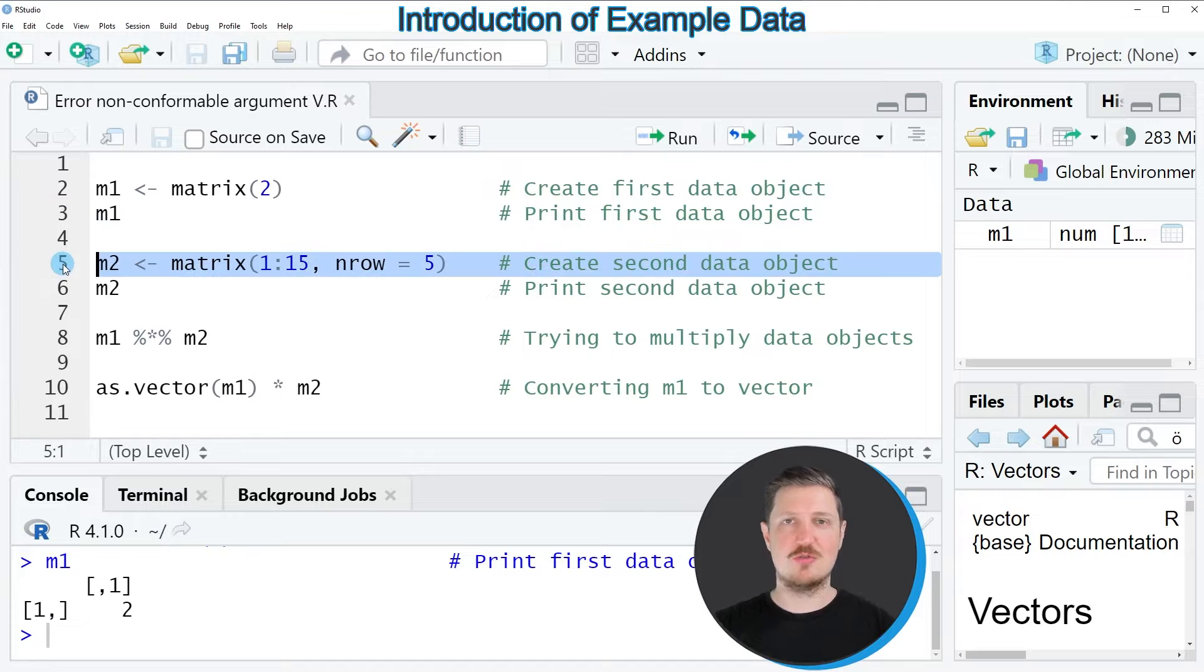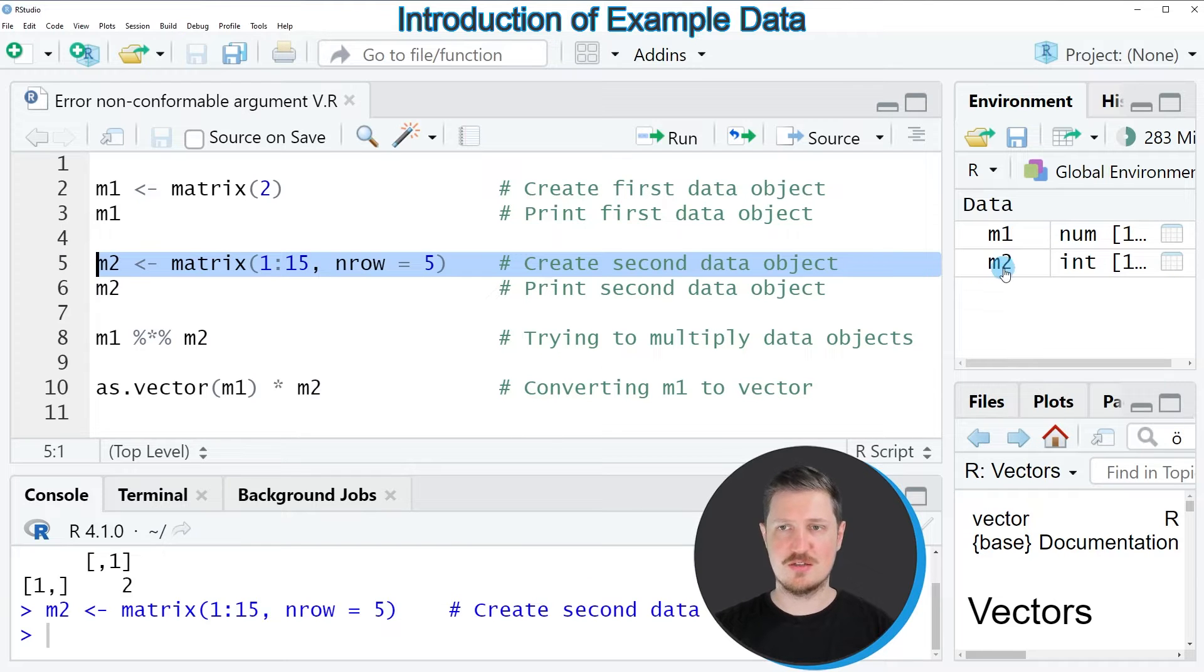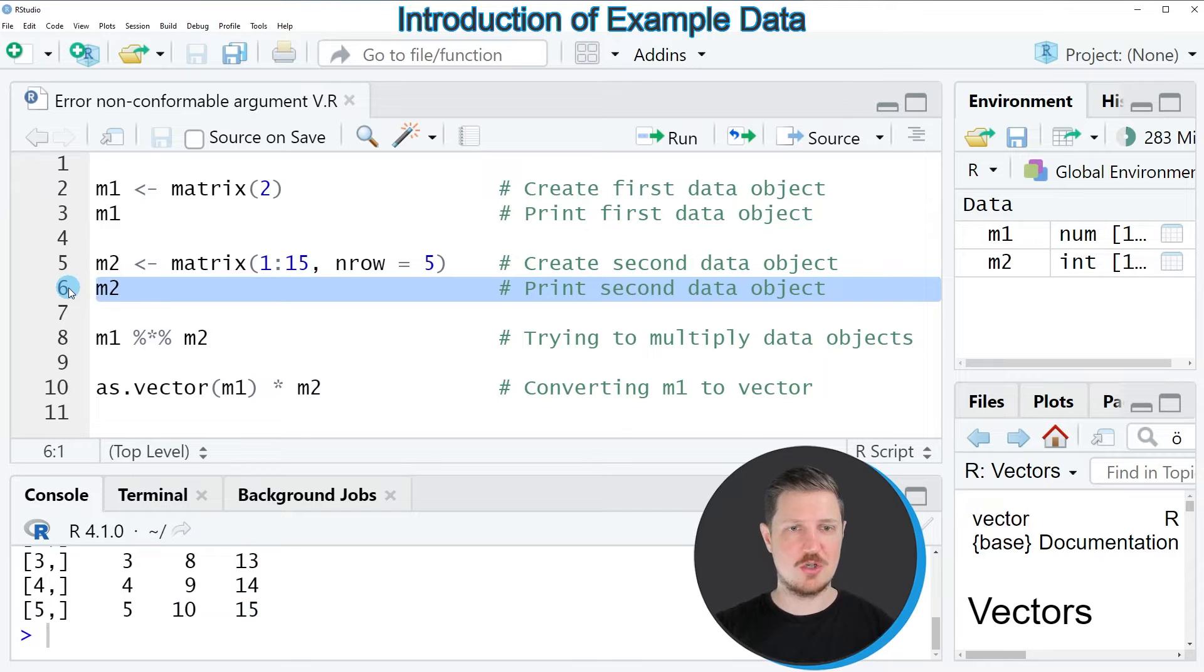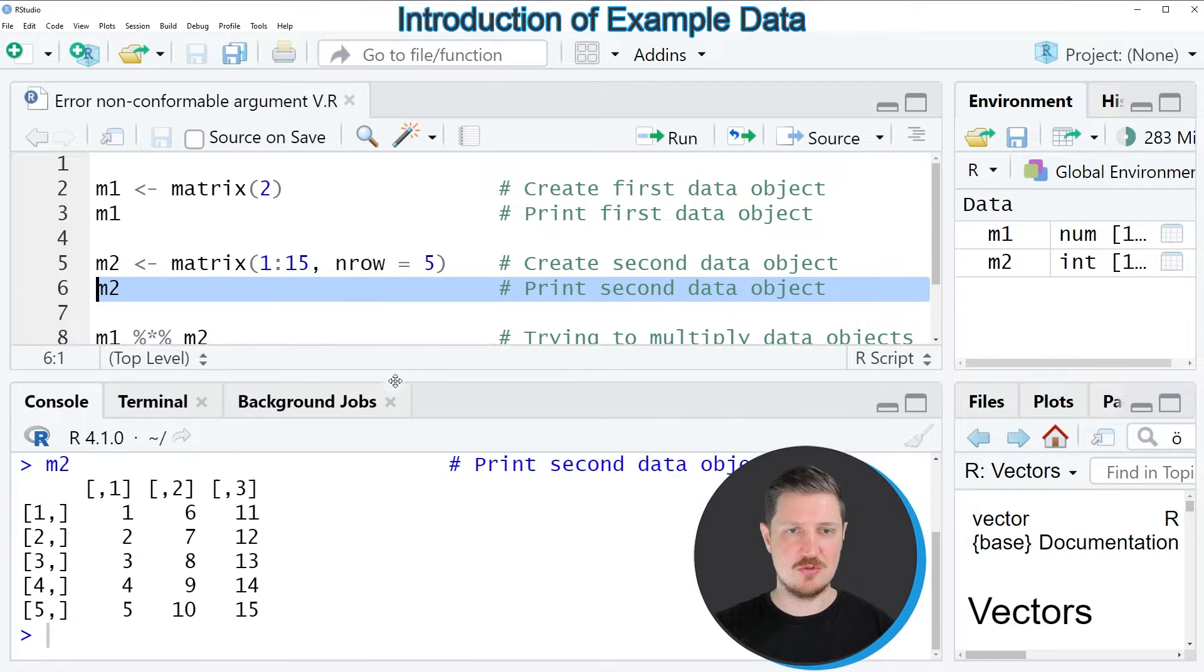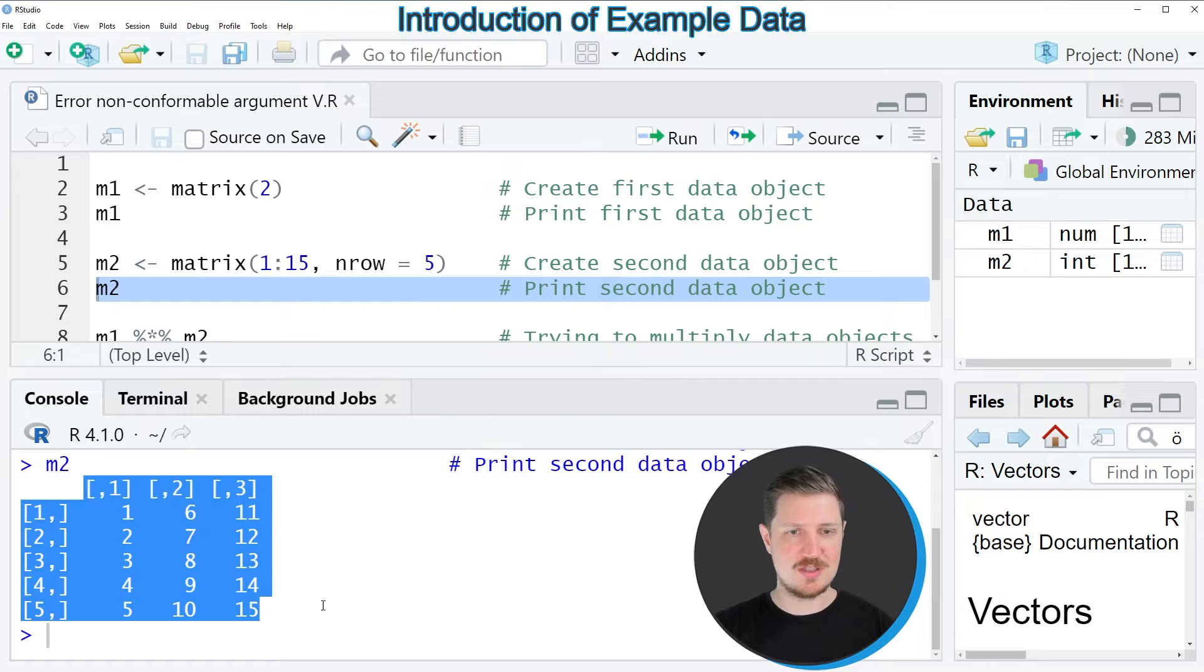In the next step we need to create another matrix that I'm calling m2 as you can see in line 5 of the code. After running this line of code our second data object m2 is appearing at the top right and we can print this data object to the bottom in the R studio console as well. Then you can see that our second data object is a matrix with five rows and three columns.